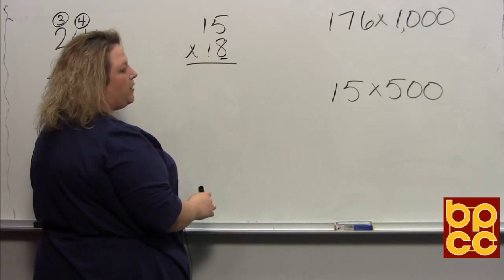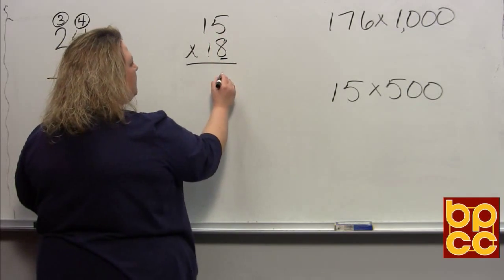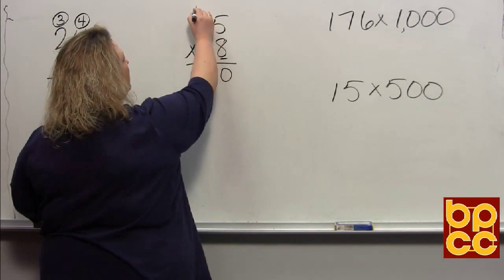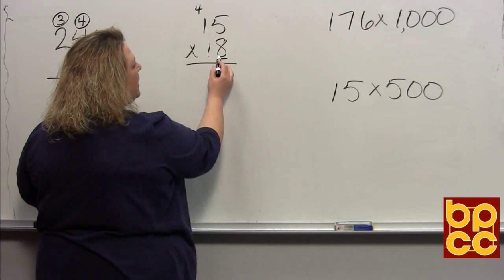We are going to multiply that 8 times both digits that are above it. 8 times 5 is 40. Put the 0, carry the 4, and then 8 times 1 is 8, plus that 4 makes 12.